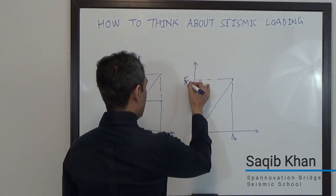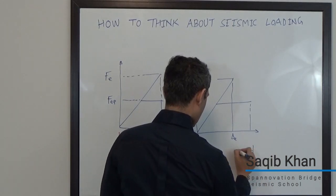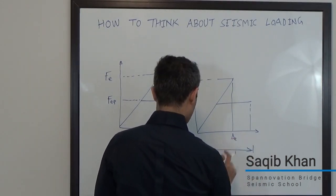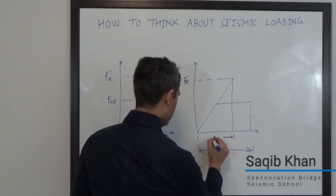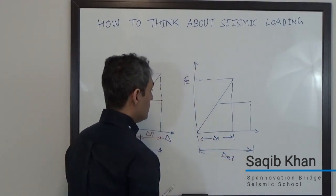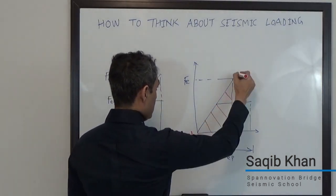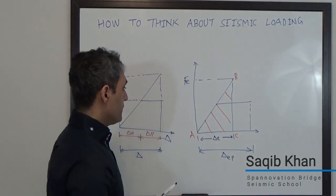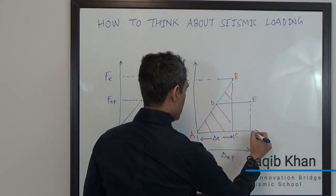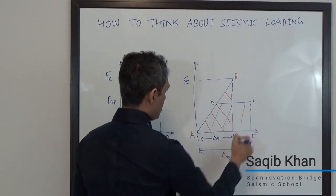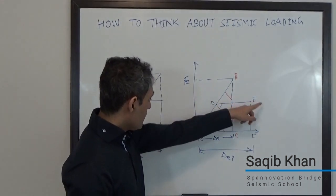Whereas an elasto-plastic system is going to do this. So this is my delta elastic, and this is my delta elasto-plastic. And the whole idea here is that the area under the force displacement graph of the elastic system is going to be the same as the area under the graph of the elasto-plastic system.